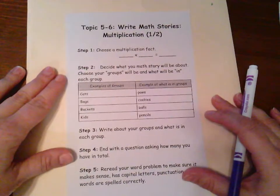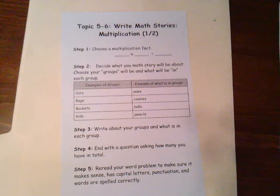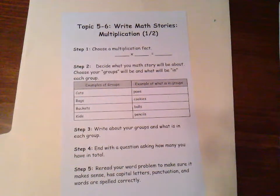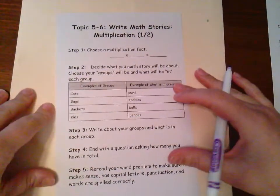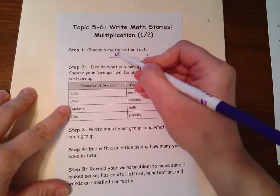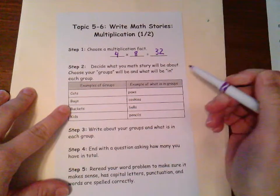So whenever we're writing stories, we first want to think about what our fact is going to be. Sometimes someone might give you a fact and say, here, write a word problem for this equation, and other times it'll just tell you, write a word problem, and you'll need to decide what fact it's going to be. So let's choose a multiplication fact. Let's go with 4 times 8, which is going to equal 32.